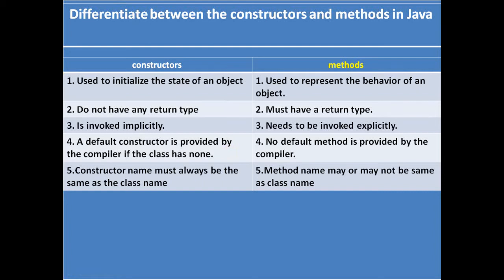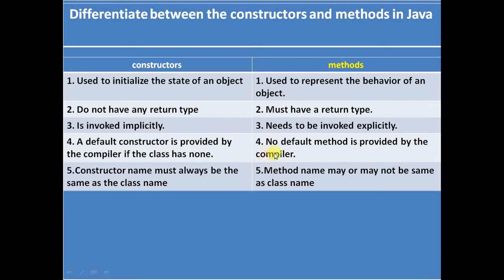Number four: a default constructor is provided by the compiler if the class has none. If you do not create a default constructor in your class and then compile your Java class, the compiler creates a default constructor and puts it in the .class file. But for methods, no default method is provided by the compiler.